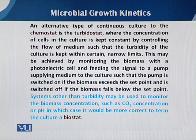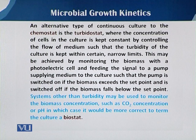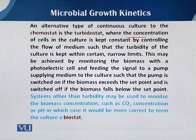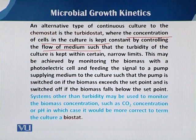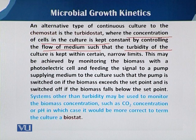There is an alternative type of continuous culture, which is the turbidostat — a different term related to chemostat. In the turbidostat, the concentration of cells is kept constant by controlling the dilution rate, which is the flow of medium into the fermentation vessel. The combined effect of substrate addition and organism growth affects the turbidity of the medium inside the fermentation vessel.